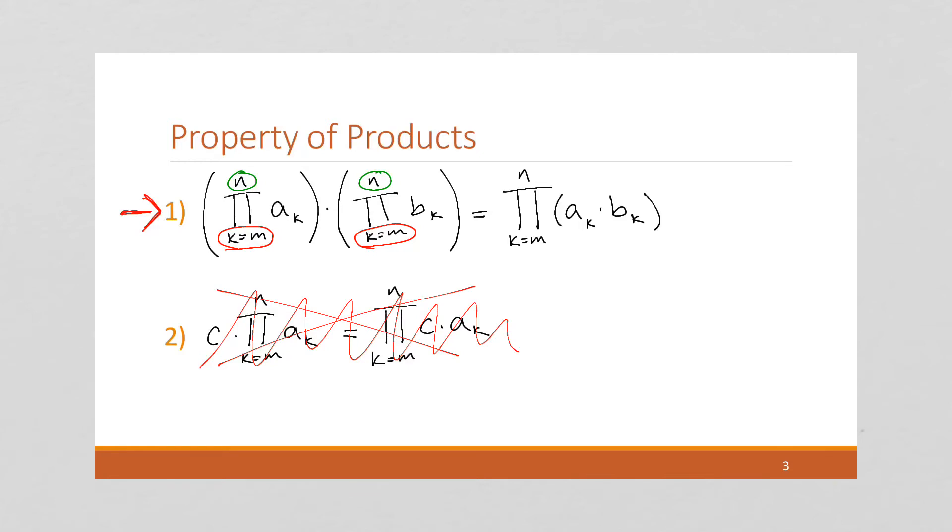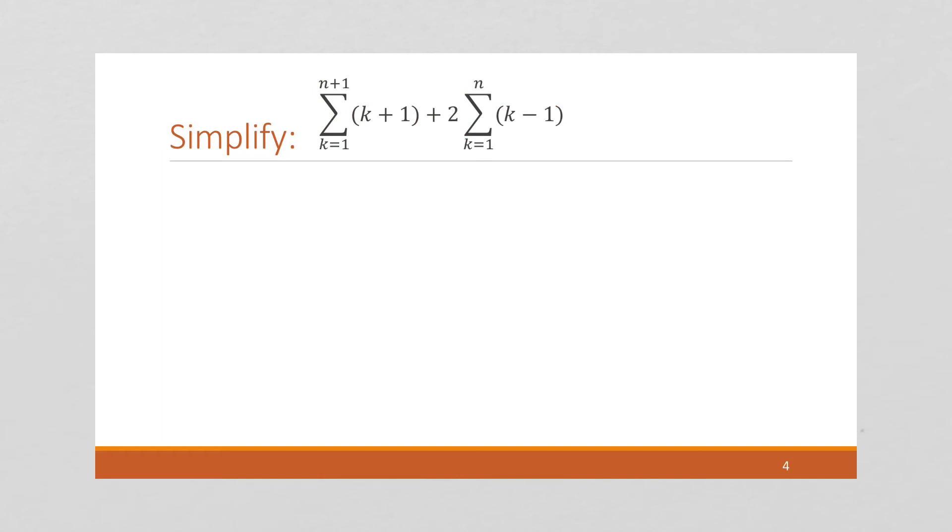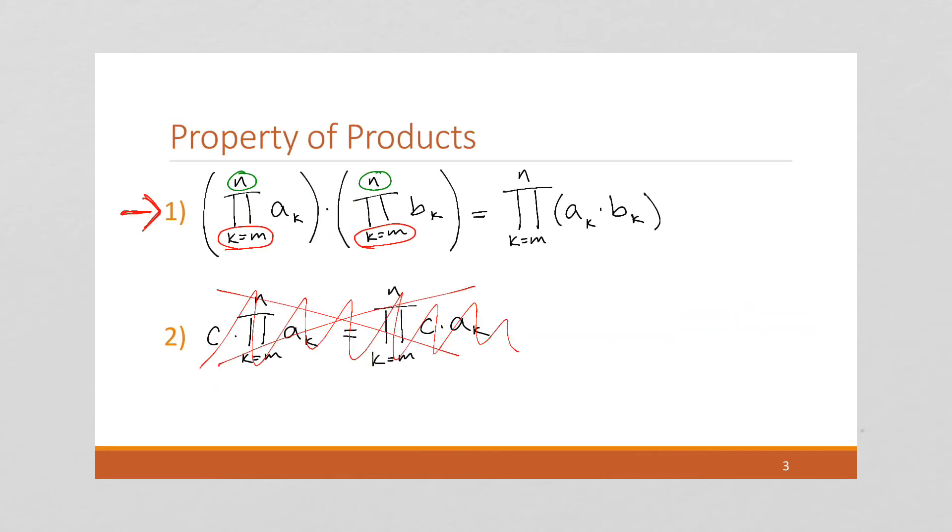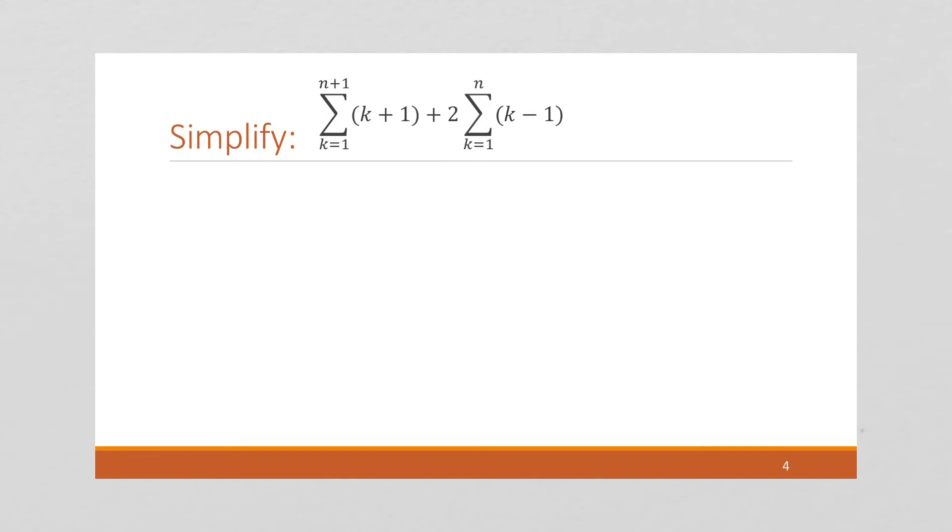So, now I'd like to do an example where we use these three different properties. We have the two properties of summations and the property of products to simplify a complex summation problem. So, notice we have two summations here.